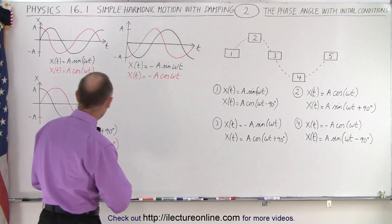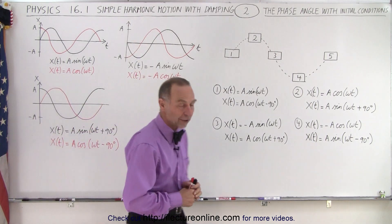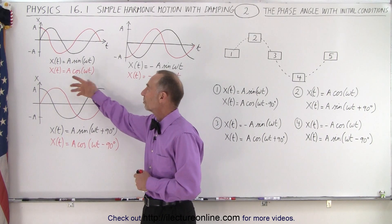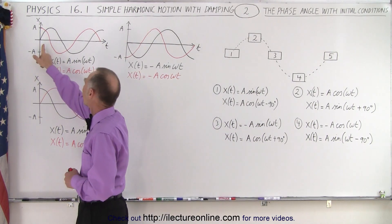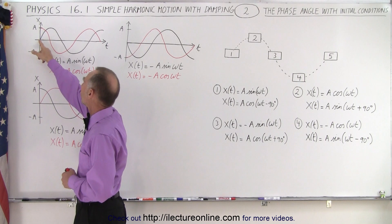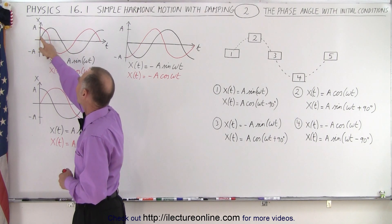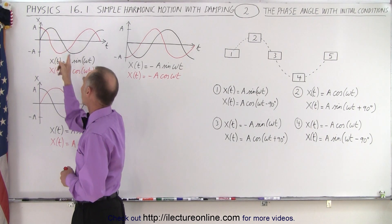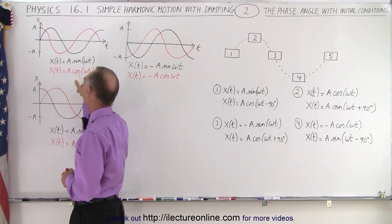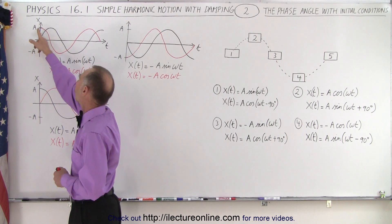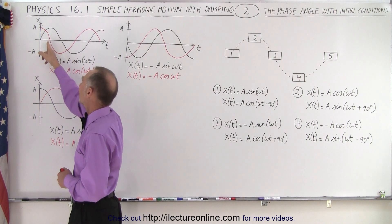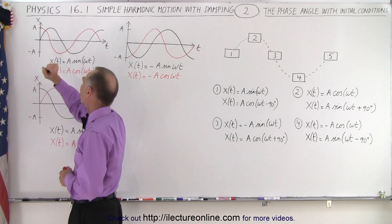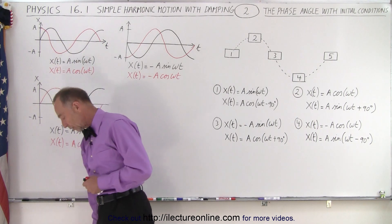Here we have some examples of the sine and the cosine function. The sine function starts at the origin between the x and the t axis and then starts going up, and after 90 degrees or pi over 2 it is at its maximum value. The cosine when time equals zero starts at 1, or 1 times the amplitude, and after 90 degrees or pi over 2 it's down to zero.